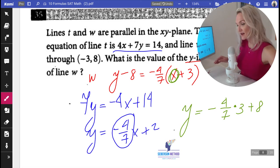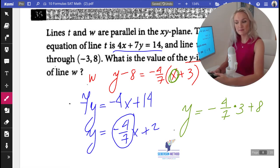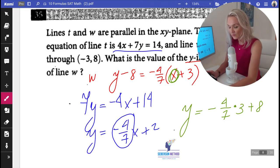I am going to use a calculator. I don't want to embarrass myself. Negative 4 sevenths times 3 plus 8. And that is going to be, I'm going to do this in a fraction if I can. I'm going to use the math frac function. And that is 44 sevenths.